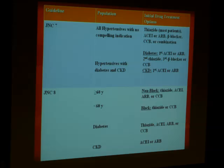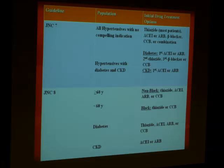JNC 8 is not strict that it must be less than 150 — if it comes to 150, they would not reduce the antihypertensive. They are okay if the patient is tolerating, even if their BP drops less than 140/90. For less than 60 years, the target is less than 140/90. And for diabetes and CKD, they have changed to 140/90.